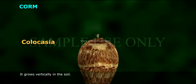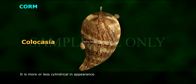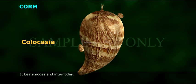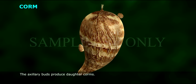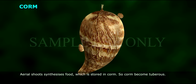Corm: It grows vertically in the soil. It is more or less cylindrical in appearance. It bears nodes and inter-nodes. At the nodes, scale leaves are present. The axillary buds produce daughter corms. The apical bud is big and produces aerial shoot. The aerial shoot synthesizes food, which is stored in the corm, so the corm becomes tuberous.